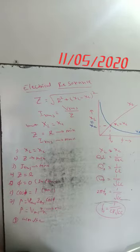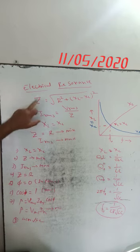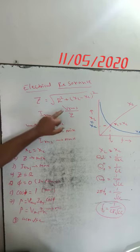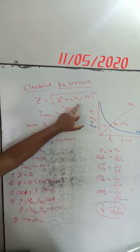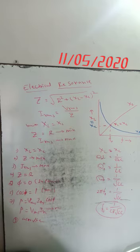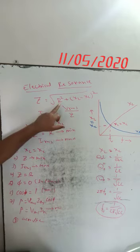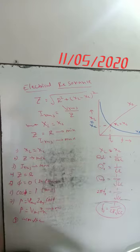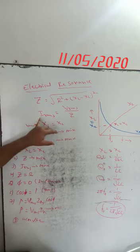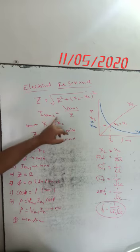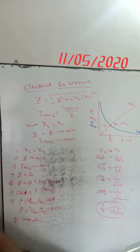Electrical resonance. We know the equation for impedance in the series LCR circuit: Z equals square root of R squared plus (XL minus XC) whole squared. R is the resistance of the resistor, XL is the inductive reactance of the inductor, and XC is the capacitive reactance of the capacitor. The RMS value of current in the resonance circuit is I_RMS equal to V_RMS upon Z.